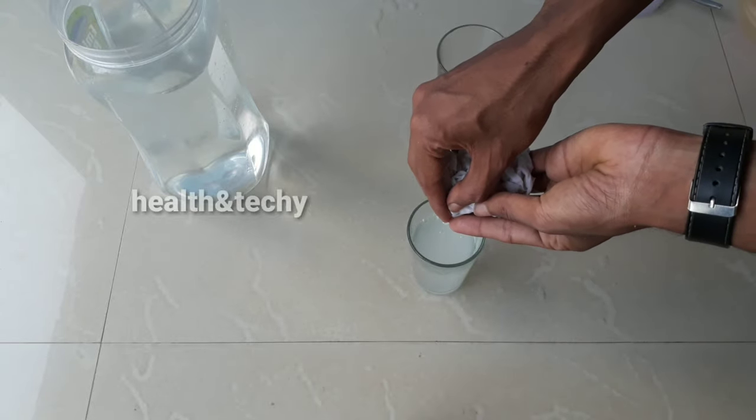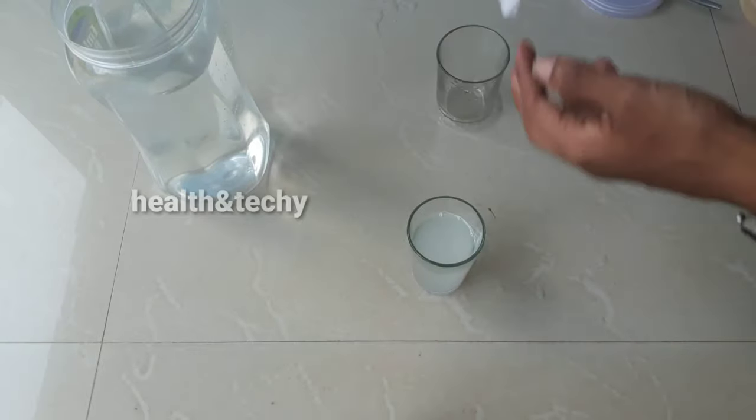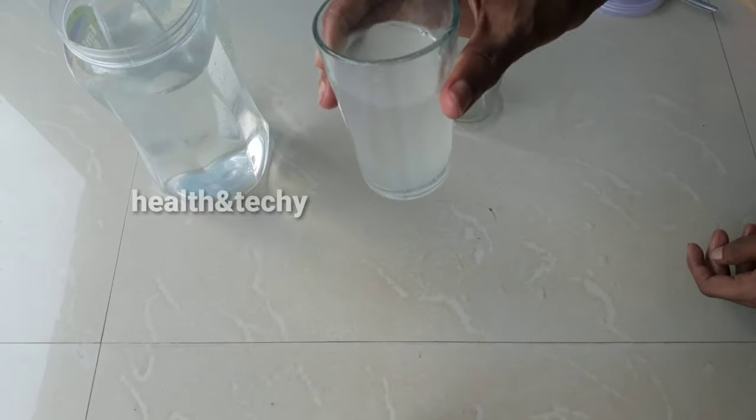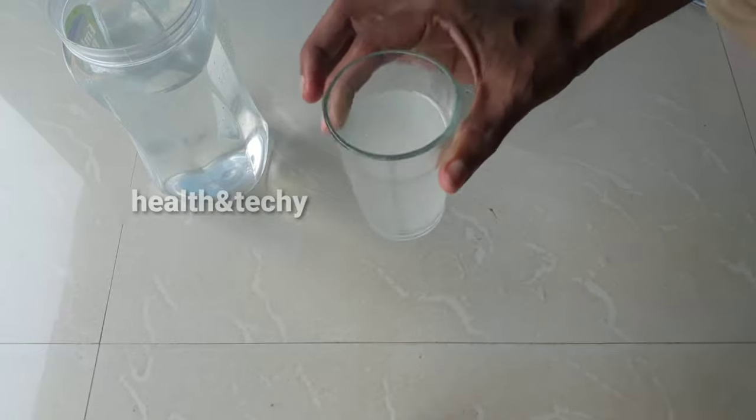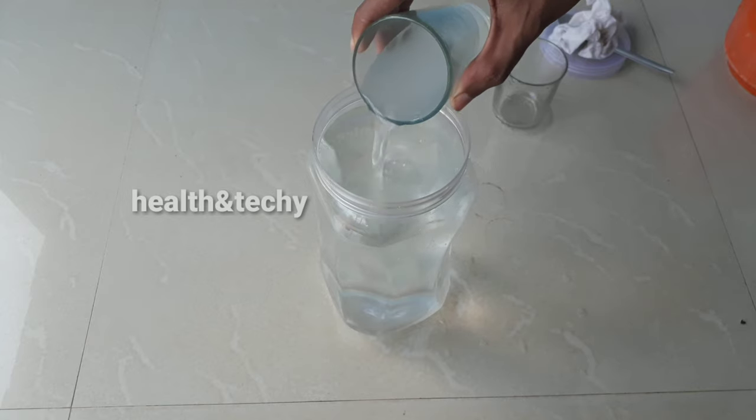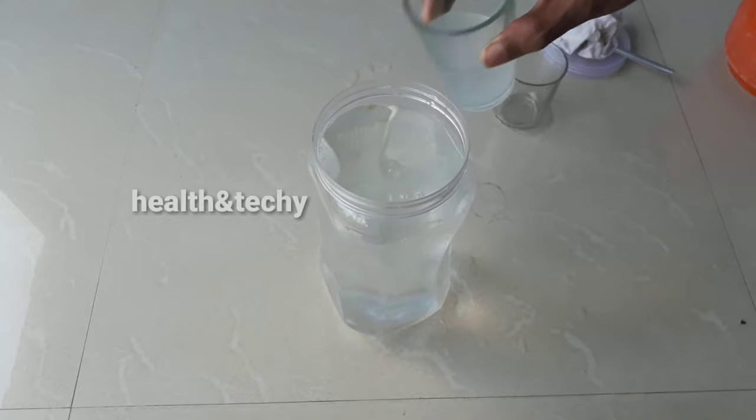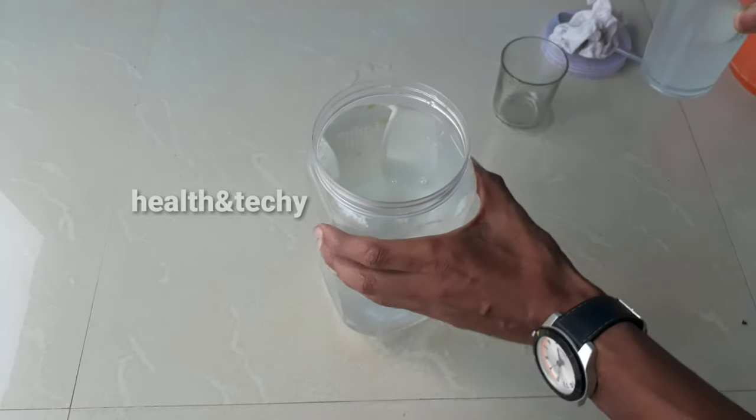Now you can see the undissolved yeast in the cloth. You don't have to pour it directly because the undissolved yeast will damage the water and kill your moina culture. Now you should add about two to three teaspoons of yeast solution into the container.